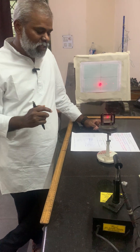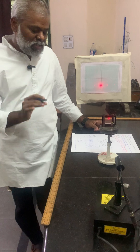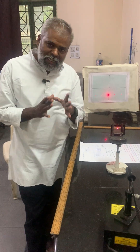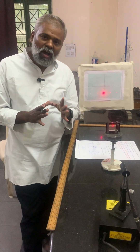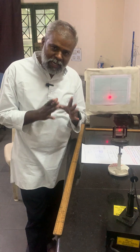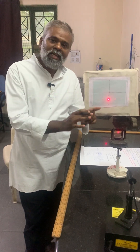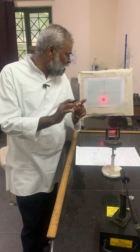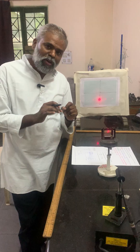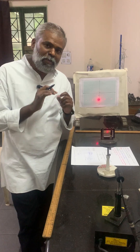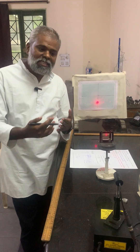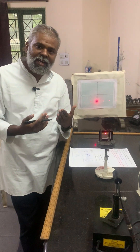The diffraction grating. So first, what is the aim? The aim is to determine the wavelength of laser light by diffraction grating. Which color is it? This color is red.